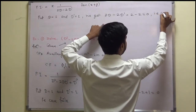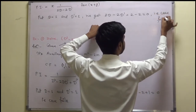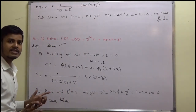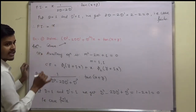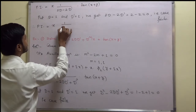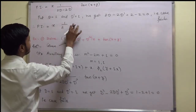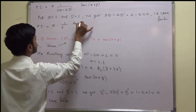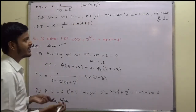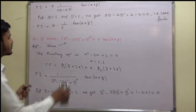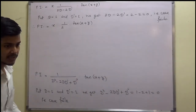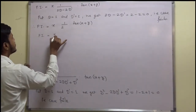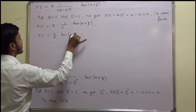Again the case fails, so without any second thought we apply the case of failure again. PI becomes: multiply numerator by x again and differentiate denominator with respect to D. The denominator becomes 2(1) - 0 = 2. So PI = x²/2 · tan(x + y).